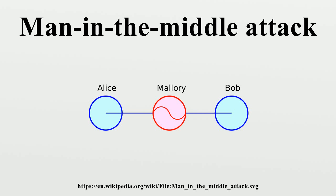Alice encrypts a message with what she believes to be Bob's key, thinking that only Bob can read it. She sends: "Meet me at the bus stop," encrypted with Mallory's key. However, because it was actually encrypted with Mallory's key, Mallory can decrypt it, read it, modify it, re-encrypt it with Bob's key, and forward it to Bob — changing the message to: "Meet me in the windowless van on 22nd Avenue."